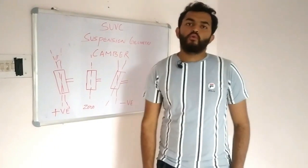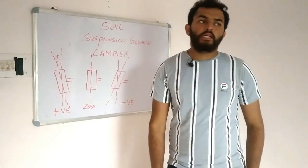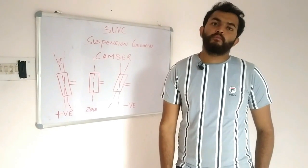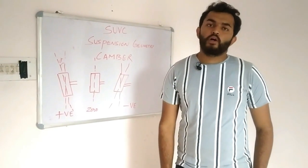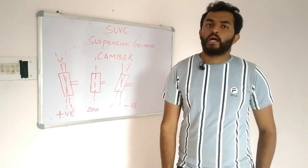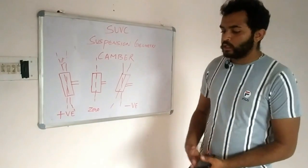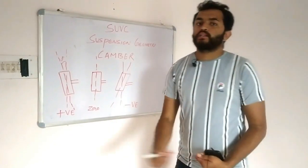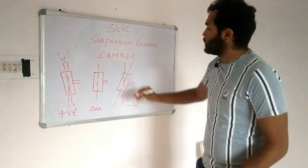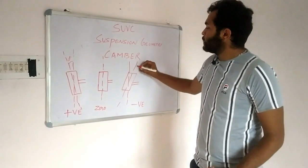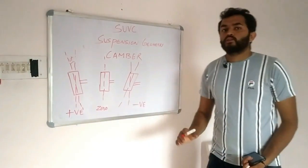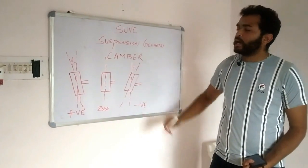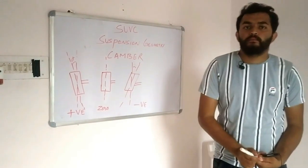First, we want to know what is Camber Angle. Camber Angle is the angle between the vertical axis of the tire and the centre line of the tire. If I draw the angle through the centre line of the tire and it is making an angle through its centre line, that angle is called Camber Angle.